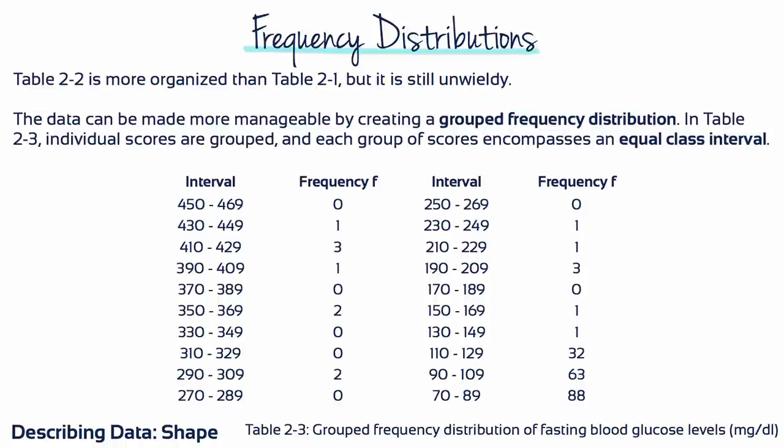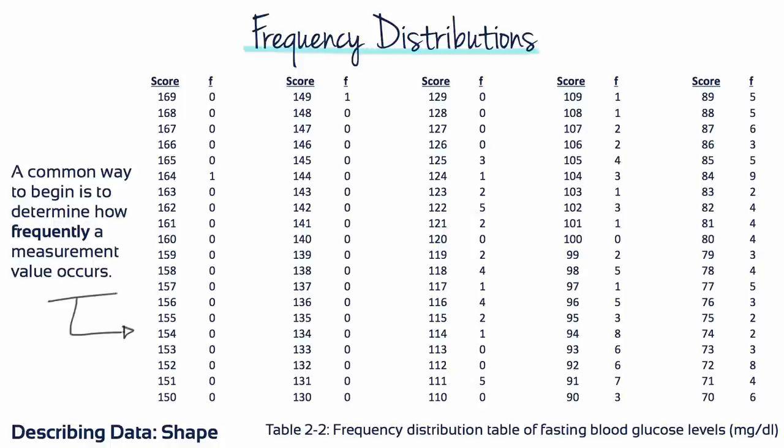Table 2.3 has a class interval size of 20. Table 2.3 is much simpler, better organized and more easily understood than Table 2.2, and it's much better than Table 2.1.